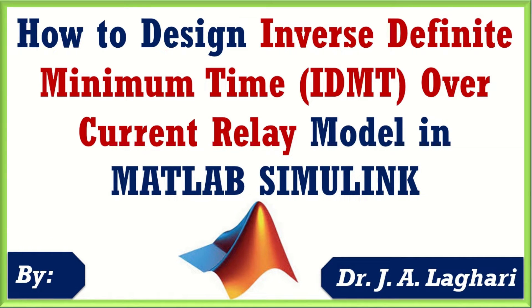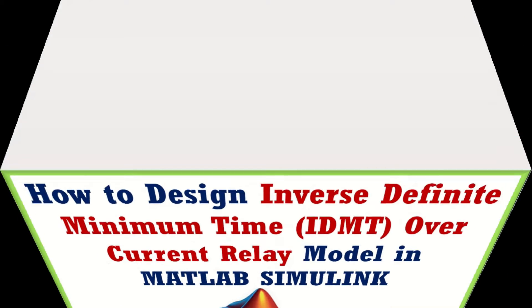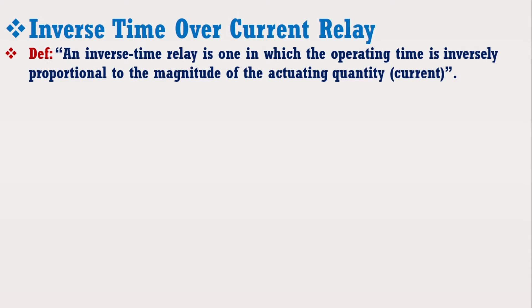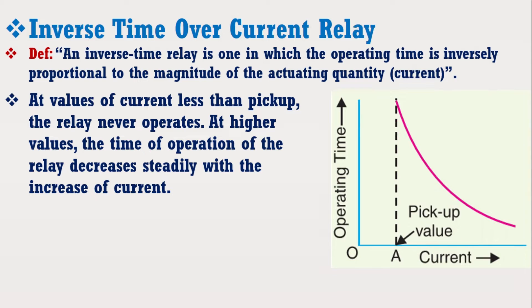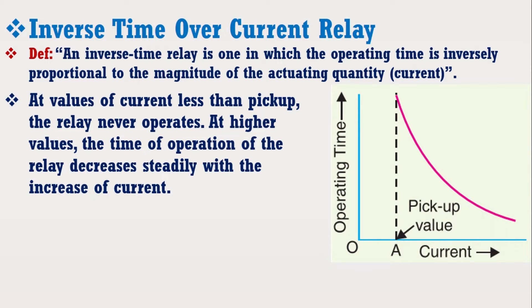Before defining the inverse definite minimum time relay, it is better to first discuss the inverse time over current relay. An inverse time relay is one in which the operating time is inversely proportional to the magnitude of the actuating quantity, which can be current or voltage. This means that at values of current less than pickup, the relay never operates, whereas at higher values the time of operation decreases steadily with the increase of current, as shown in the figure.